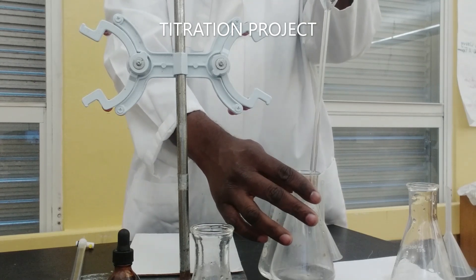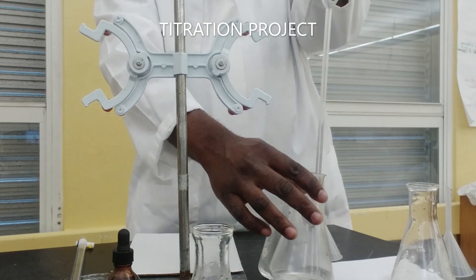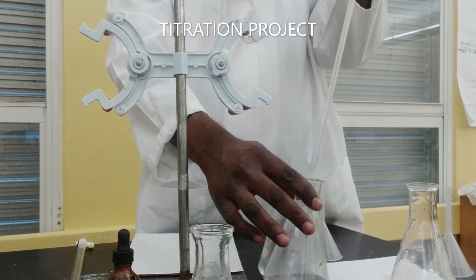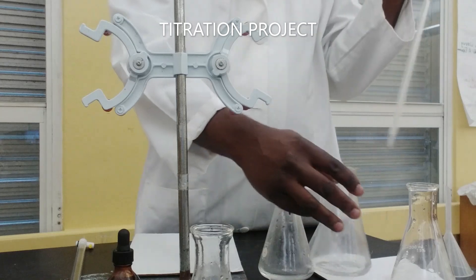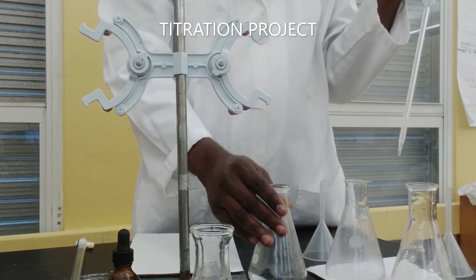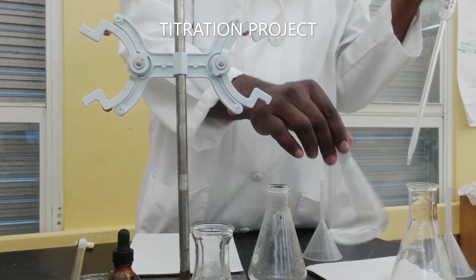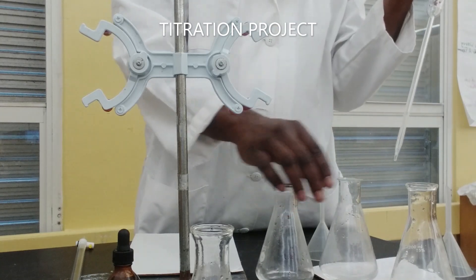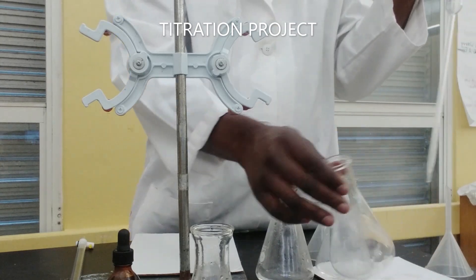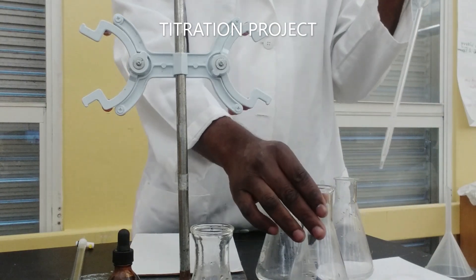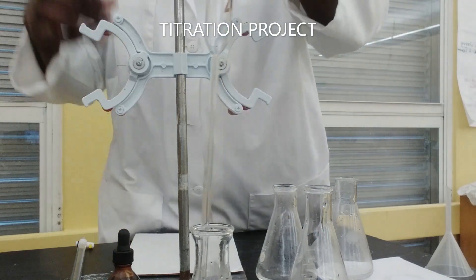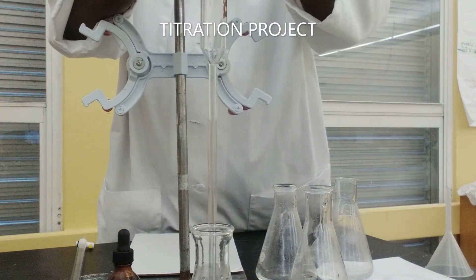So I intend carrying out three trials of my titration. I'm going to have 25 milliliters of acid transferred into three of my flasks. So here we go for the third one.